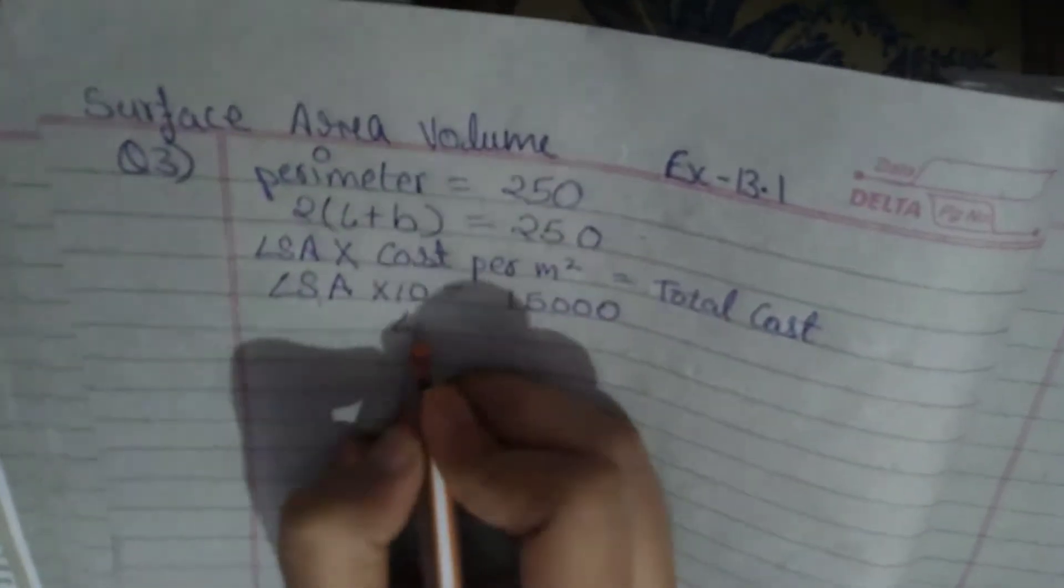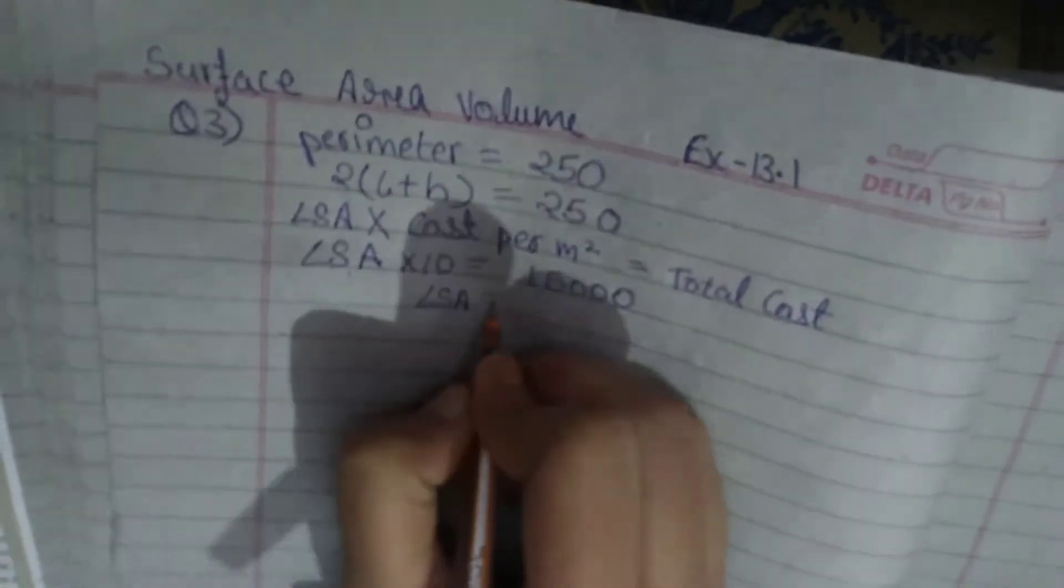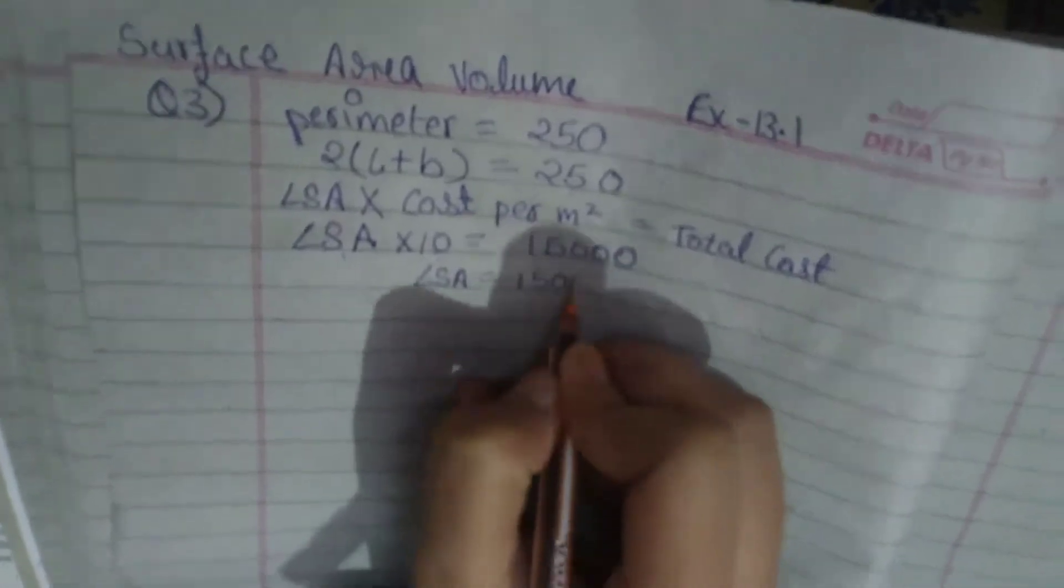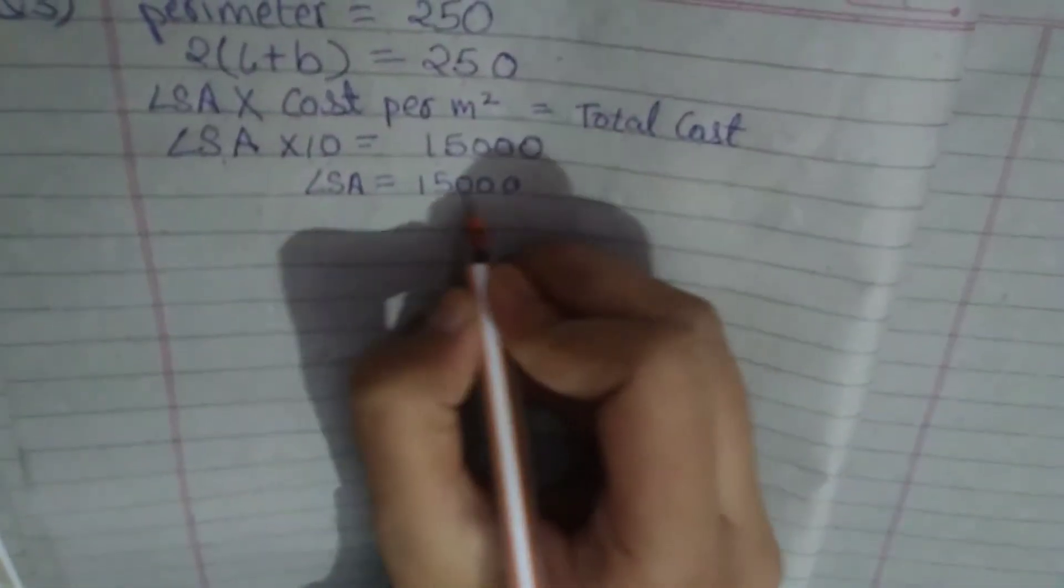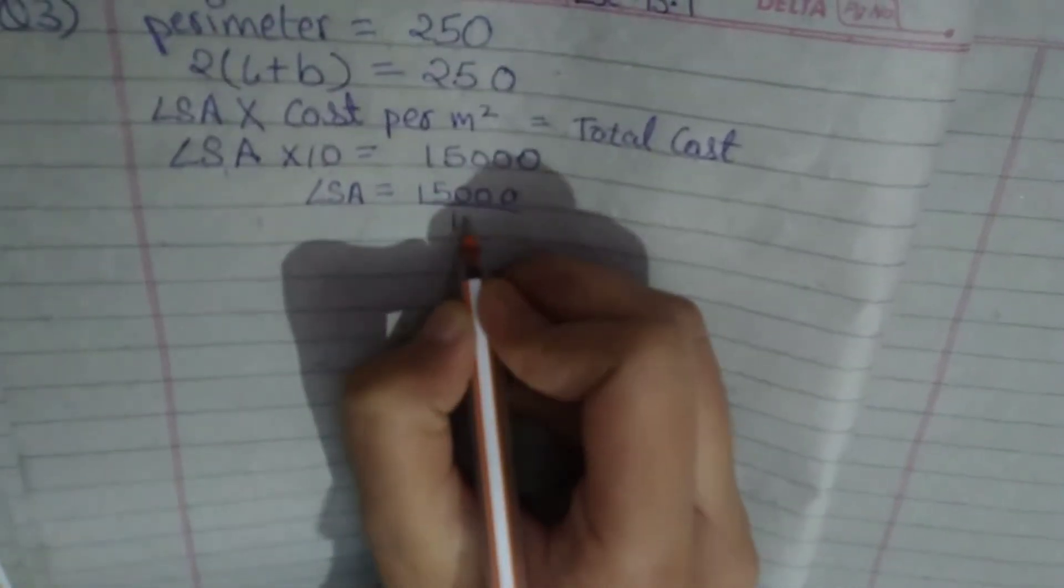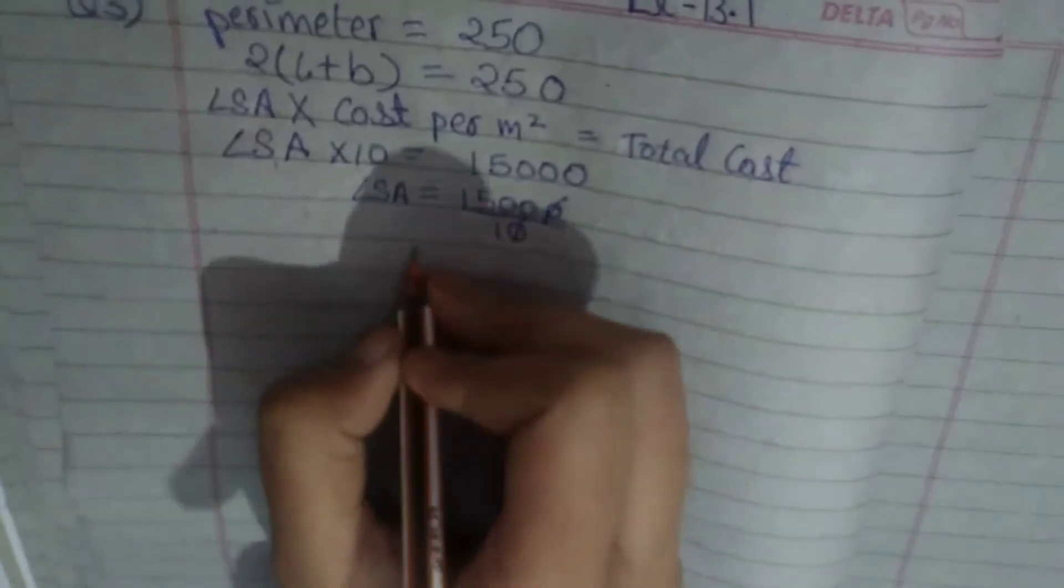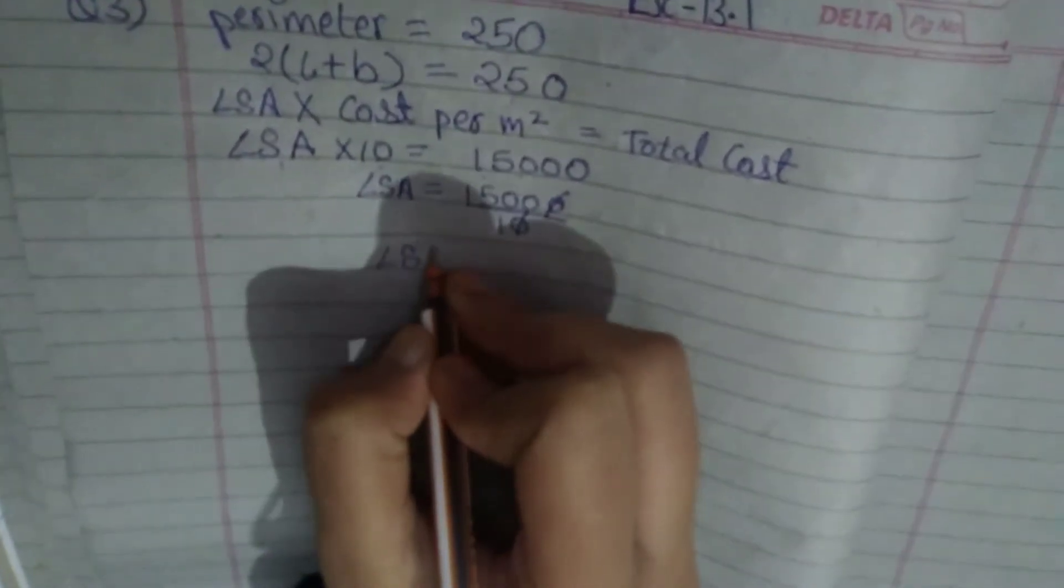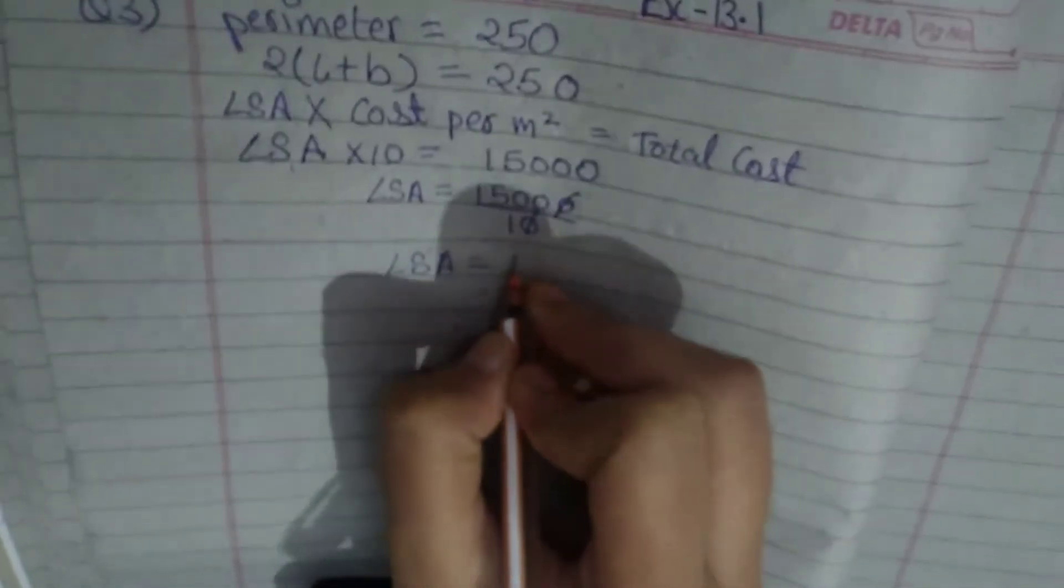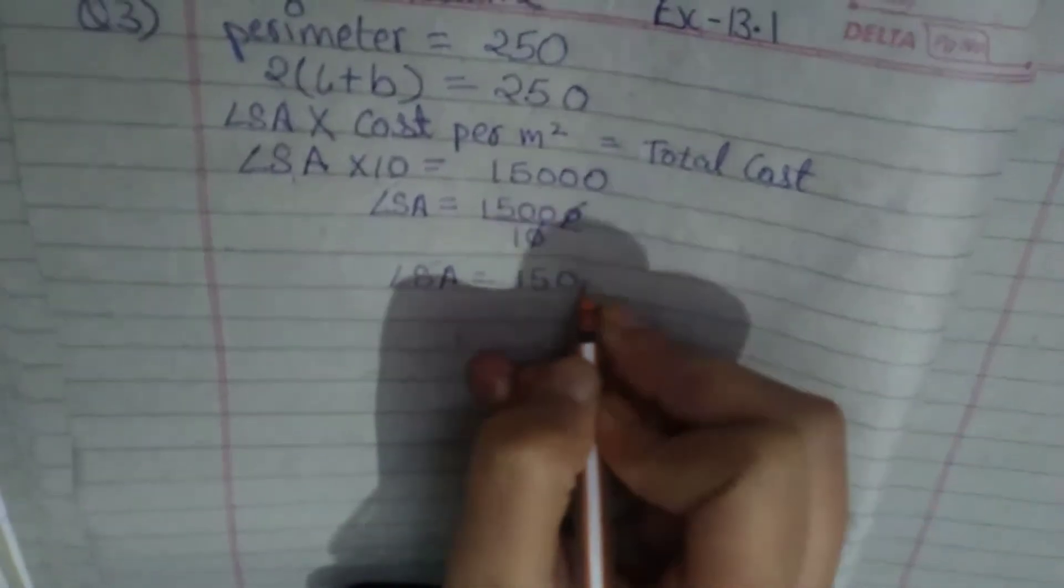LSA is equal to 15,000 upon 10. We are going to cut 0 with 0, so we got LSA as 1500 meter square.